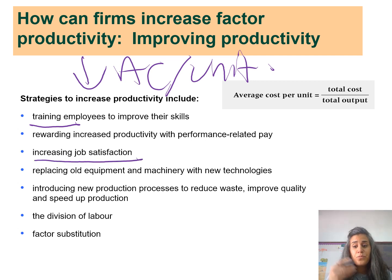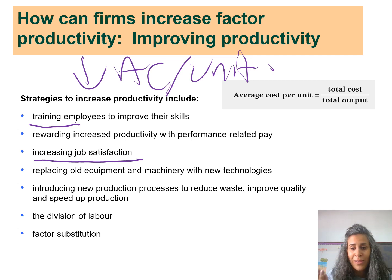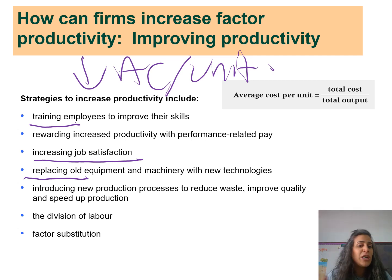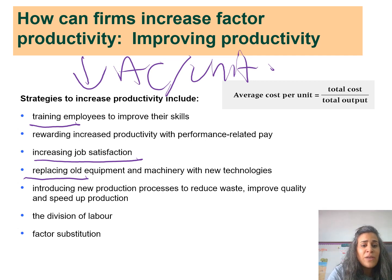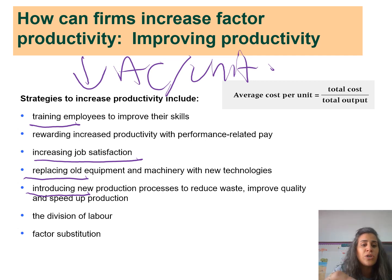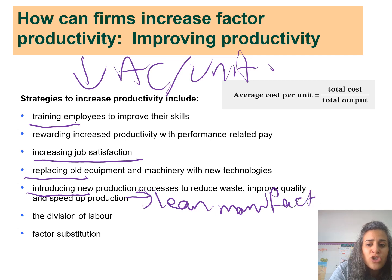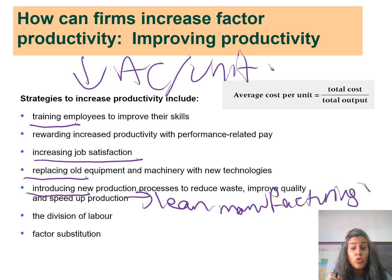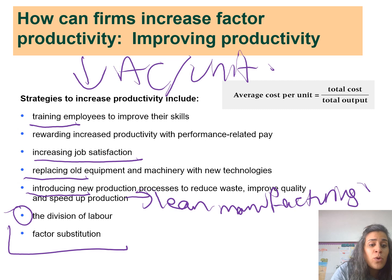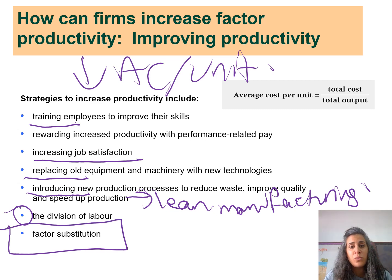Third, increase job satisfaction — let employees be happy, because the happier and more motivated they are, the more productive they will be. Fourth, replace old equipment and machinery with newer technologies for faster production rates. Fifth, introduce new production processes to reduce waste, improve quality, and speed up production — this is called lean manufacturing.